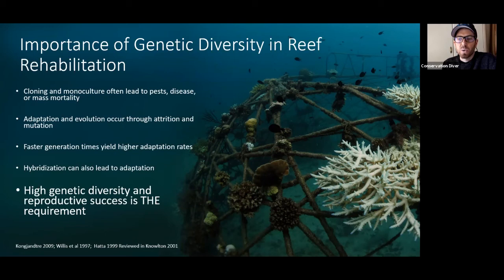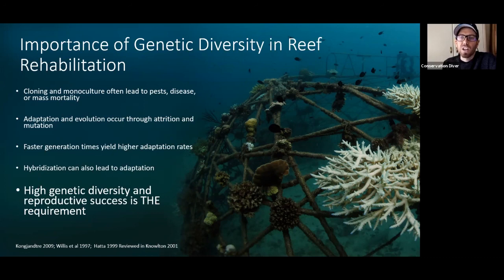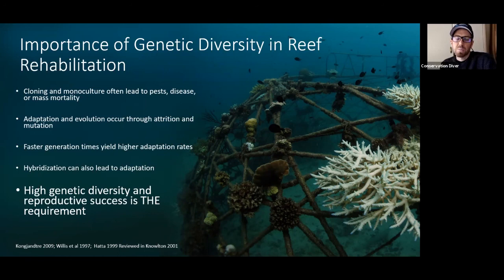She found that there were more than 43 different species that were actually hybrids. And in the Caribbean for a very long period of time, they thought they had three species of acropora — three distinct species.